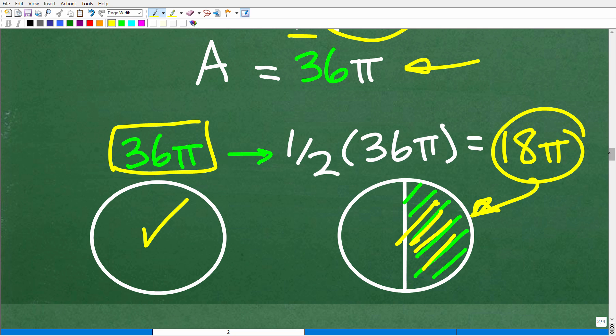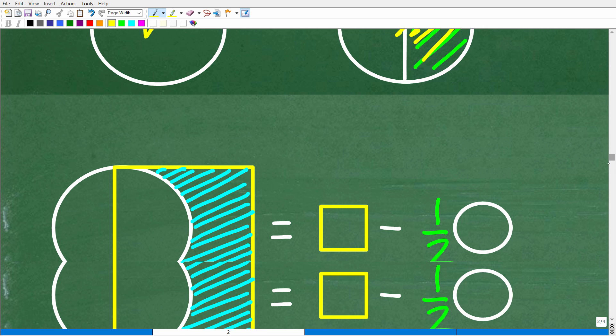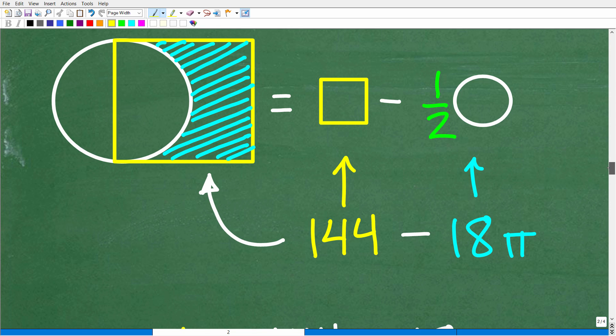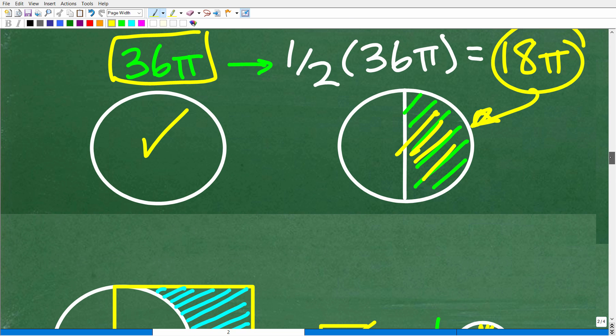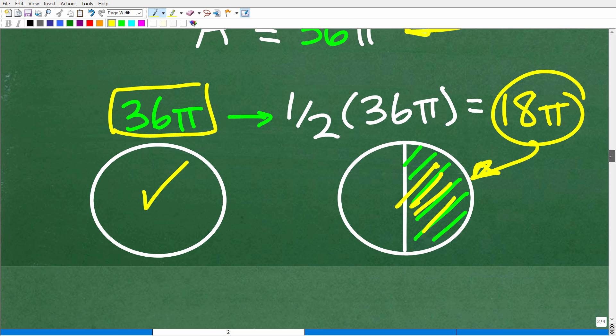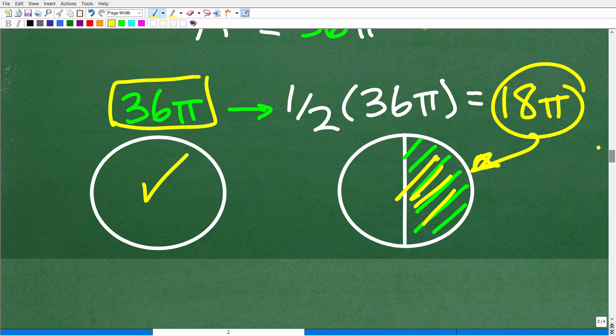Okay, so now let's go ahead and put this all together. So let's revisit our strategy. To find the area of the shaded region, we needed to find the area of the square, which we did. That was 144 units squared. And then we needed to find the area of that semicircle, which is one half of the circle, which of course is 18π. Remember, we had to find the area of the circle and then find the area of the semicircle by dividing the area of the circle by 2.